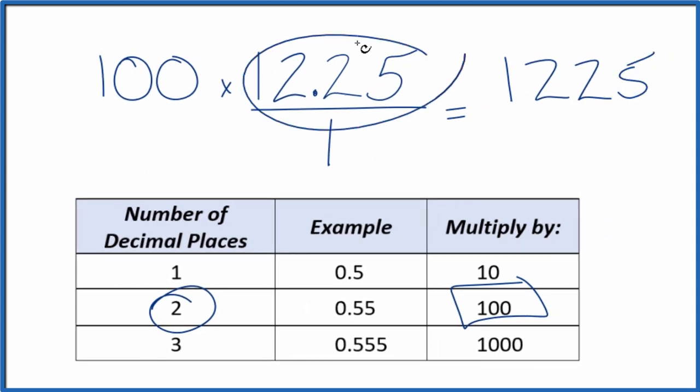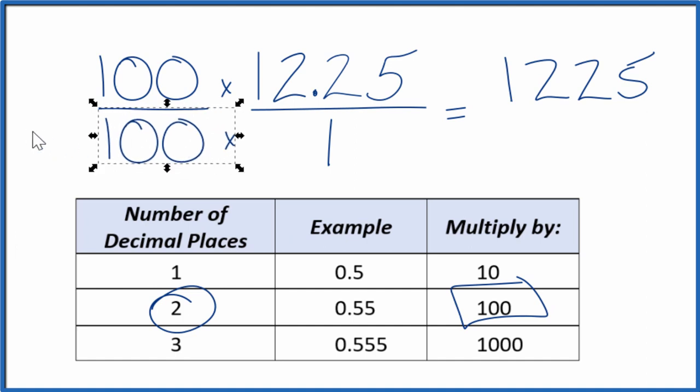But I can't just multiply the numerator here by 100. I also need to multiply the denominator. That's because 100 over 100 is 1. When you divide 100 by 100, you get 1, so we're just multiplying by 1. We don't change the value, just the way it's represented. 100 times 1, that's 100. And we have our fraction.